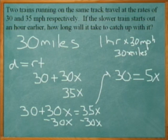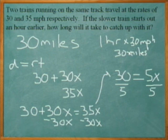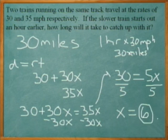I want to solve for x, get x by itself, so I look at the number in front of the x and divide by that number. That leaves me with x and 30 over 5. 30 divided by 5 is 6. So after that initial hour, it's going to take the 35 miles per hour train 6 hours to catch up to the other train.